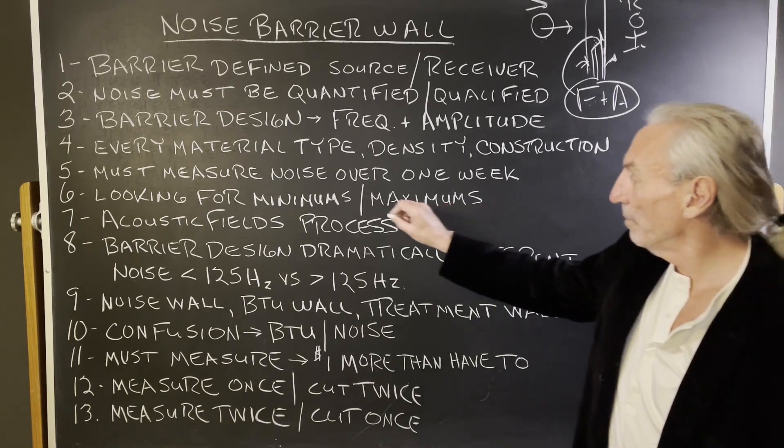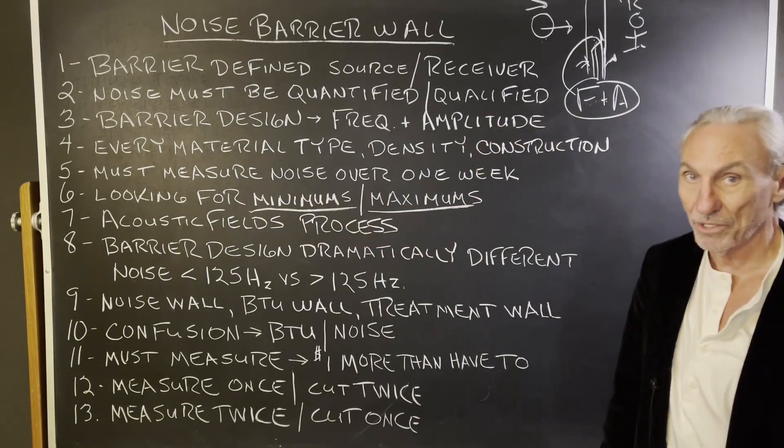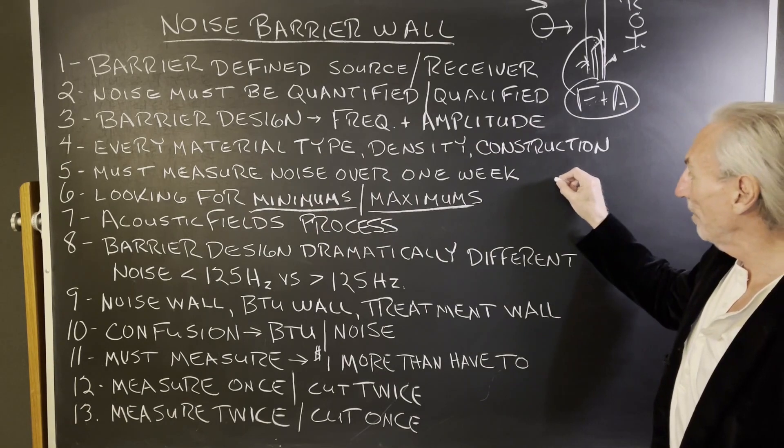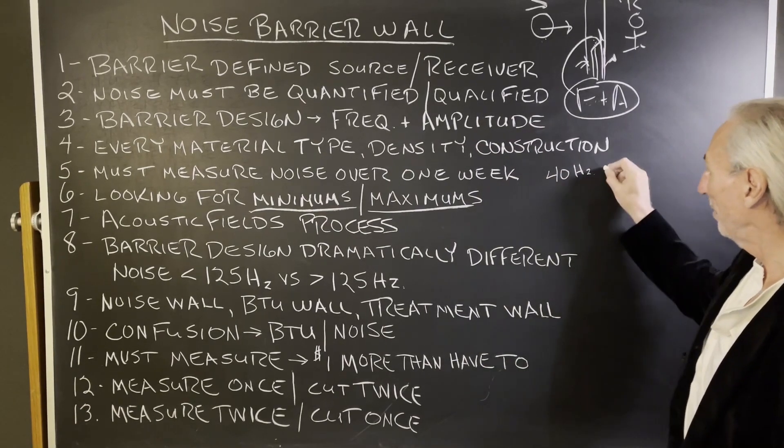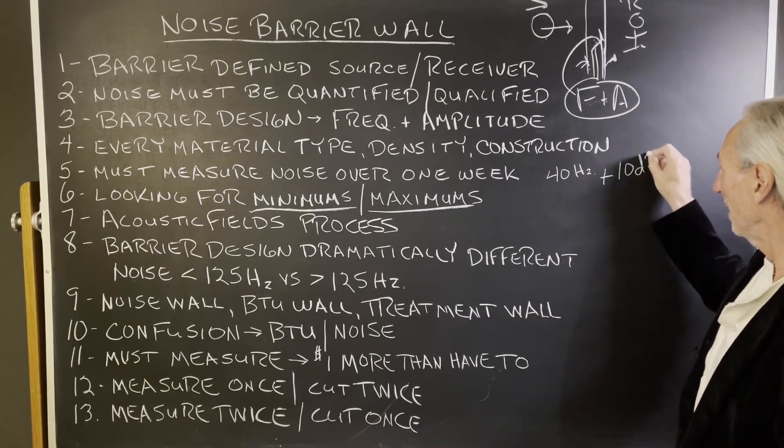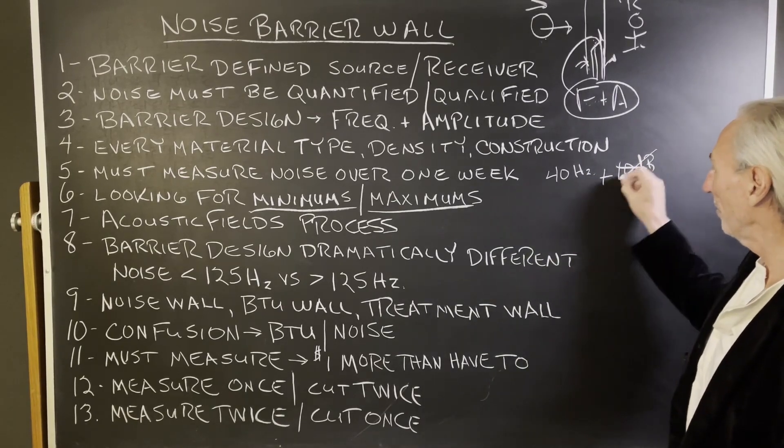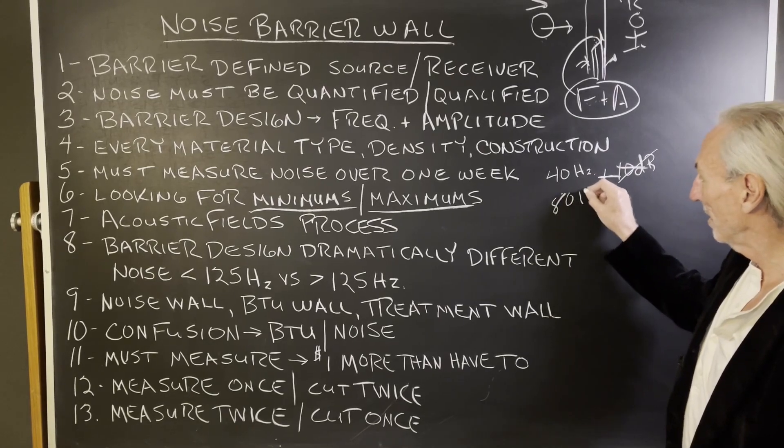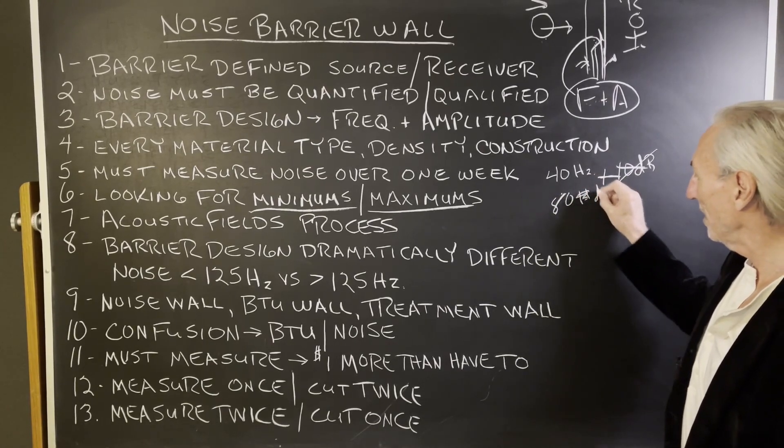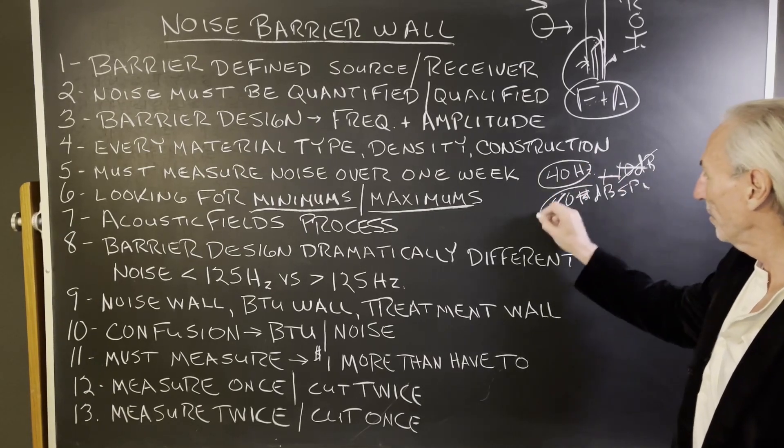What are we doing when we're measuring? We're looking for minimums and maximum pressures. Let's say one day at 40 hertz, we have like plus 10 dB over baseline in that area. Or let's say, let's even forget about that. Let's say it's 80 dB SPL at 40 hertz on a certain day. That's the highest pressure on that day. So on that day, we have to have a barrier that can handle 80 dB SPL.